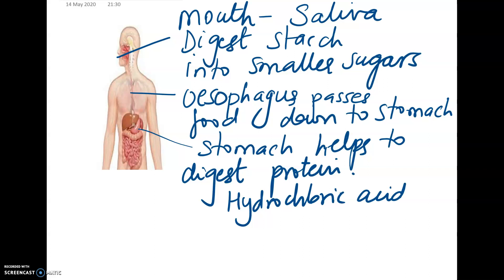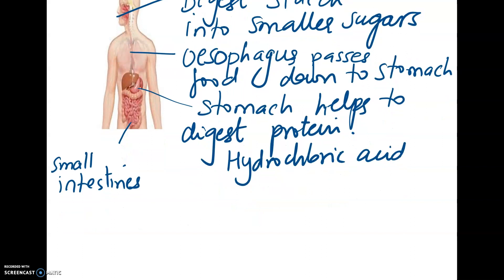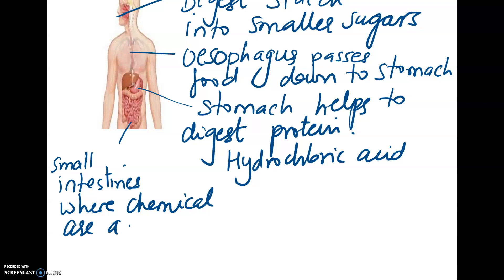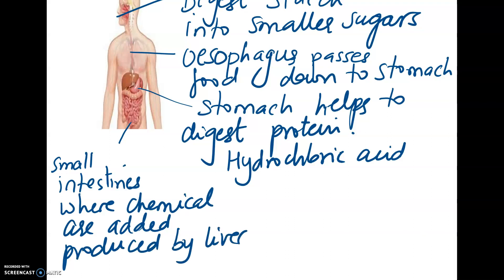When the food has been broken down in the stomach, it goes to the small intestine. As the food stays in the stomach for many hours, it goes through a process of churning. During churning, the food starts to break down into a fluid. This fluid has a larger surface area, which makes it easier to be absorbed. In the small intestine, chemicals are produced by the liver and the pancreas.